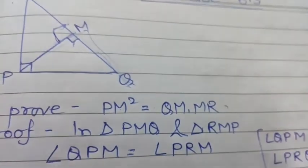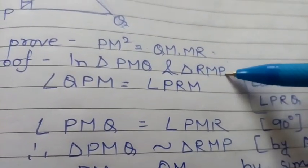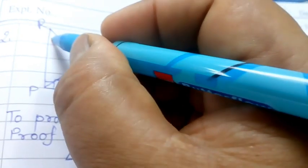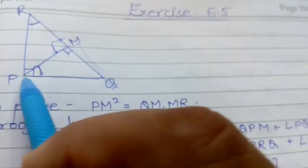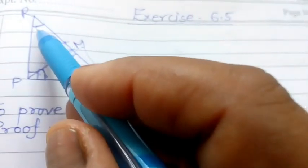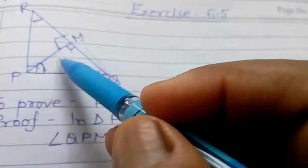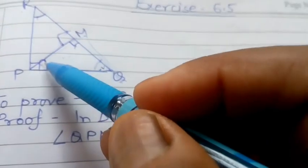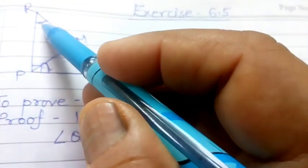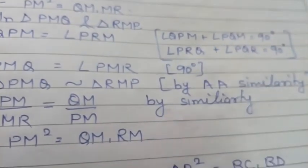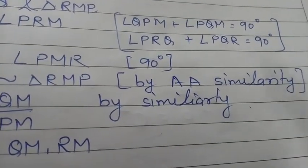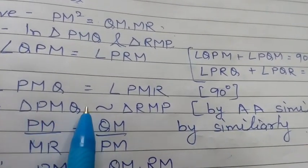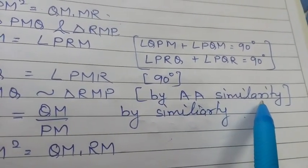In triangles PMQ and RMP, angle QPM equals angle PRM. Why? In triangle PQR, the right angle is at P, so the sum of angles R and Q equals 90°. In triangle PMQ, angle PMQ = 90°, so angle MPQ + angle Q = 90°. Since angle Q is common, angle MPQ equals angle R. Also, angle PMQ = angle PMR = 90°. Therefore, triangle PMQ is similar to triangle RMP by AA similarity.